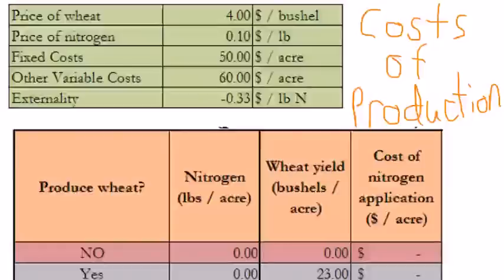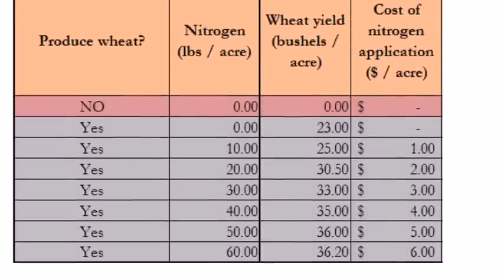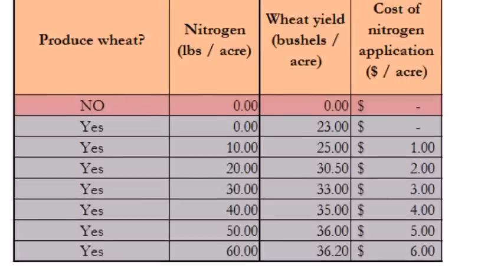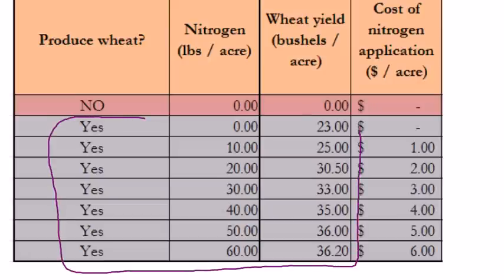The purpose of this video is to talk about calculating cost of production, including variable cost and fixed cost, in the context of the wheat example we've looked at in previous videos. To remind you of what that example is, we have a table that tells us we have the option of not producing any wheat. If we don't produce wheat, the yield is zero. But if we do decide to plant wheat, we have to decide how many pounds of nitrogen fertilizer we're going to put down — and higher yields often require more nitrogen.